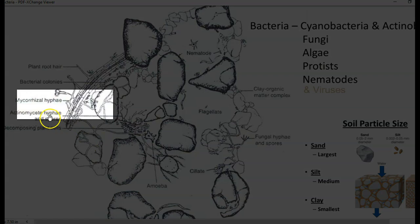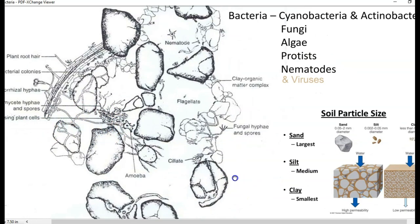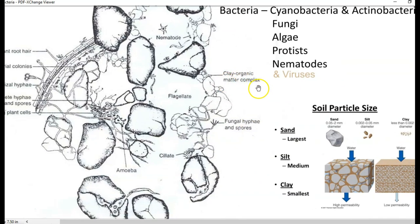You can also see hyphae of actinorhizal origin. The difference will be size of the hyphae. Mycorrhizal hyphae will be of a larger size whereas actinomycorrhizal hyphae will be very small. That is why actinomyces were also referred as thread bacteria. You can see some decomposing plant cells and even the clay organic matter complexes.